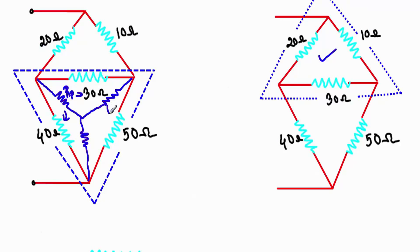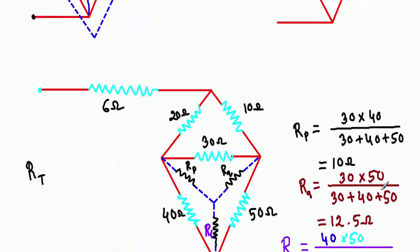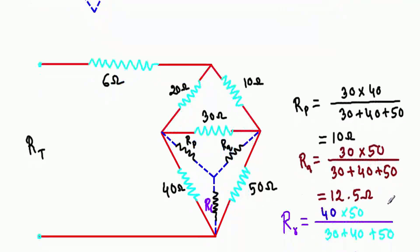Now for RQ, I will take the two adjacent resistors and multiply them, then divide by the sum of the Delta branch resistances. So RQ = (30 × 50) / (30 + 40 + 50) = 12.5 ohm.